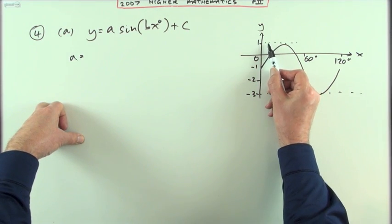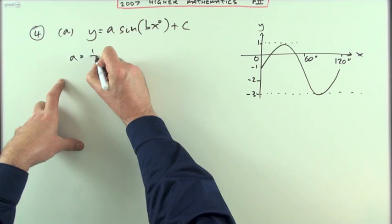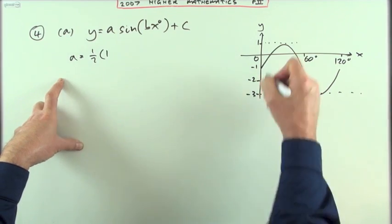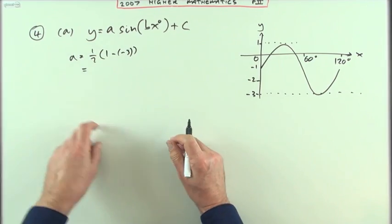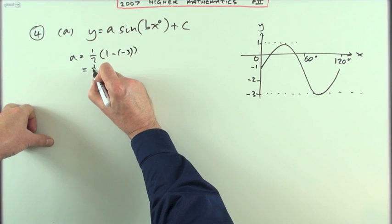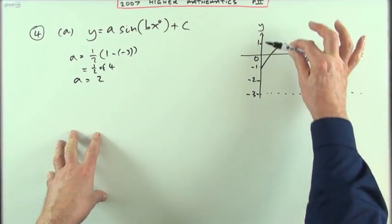Well, if it goes from 1 to negative 3, that gives you twice the amplitude, so the amplitude would be half of the difference between them. 1 take away negative 3, just to put some working down. So that's a half of 4, so A must be 2.